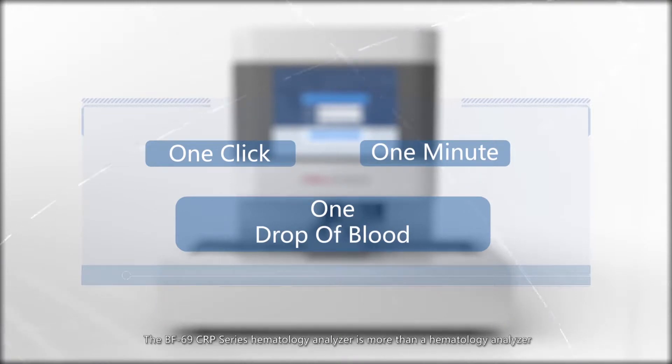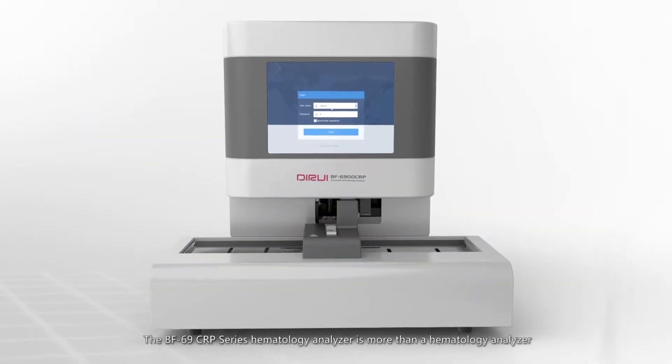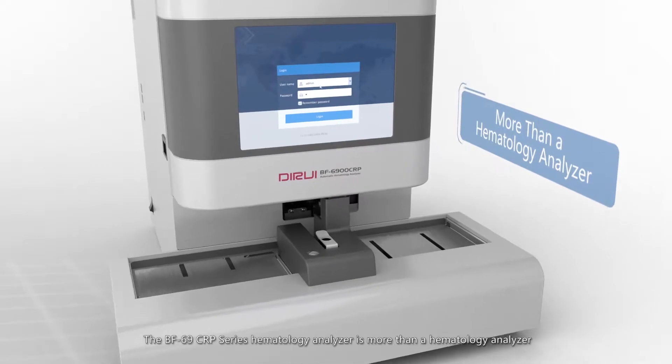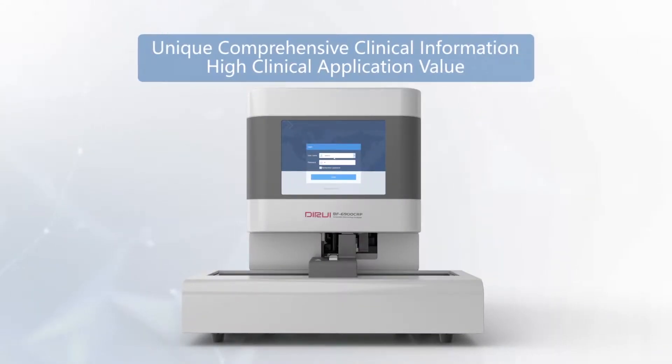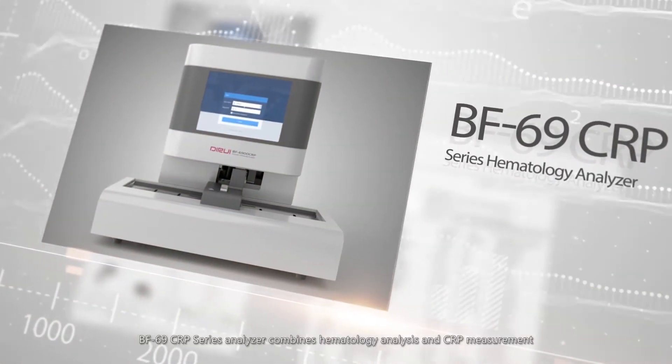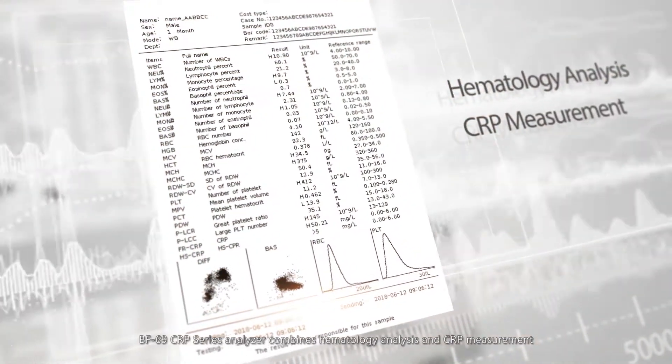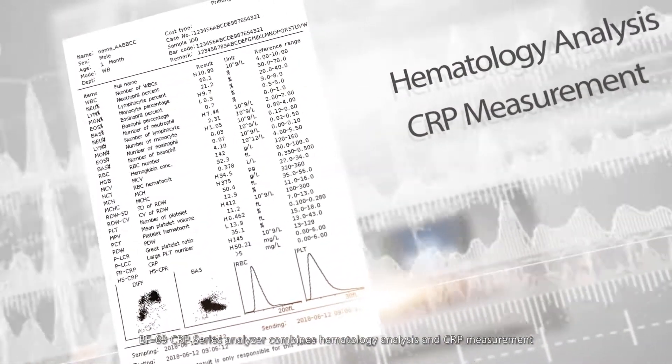The BF69-CRP Series Hematology Analyzer is more than a hematology analyzer. Unique comprehensive clinical information, high clinical application value. BF69-CRP Series Analyzer combines hematology analysis and CRP measurement.